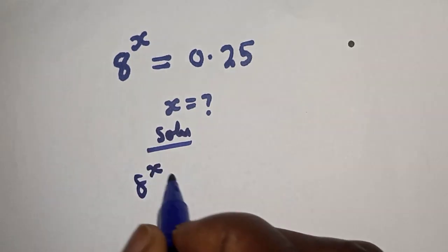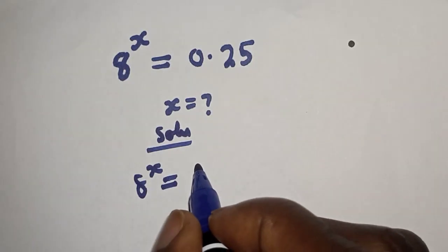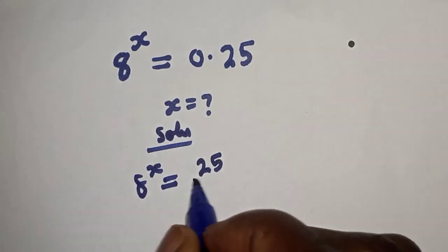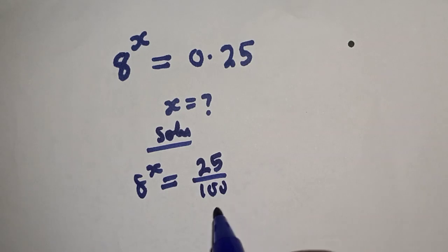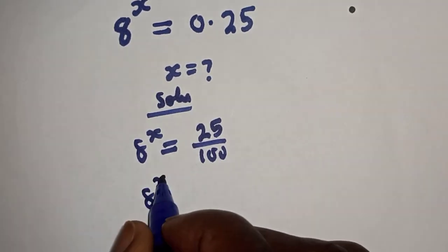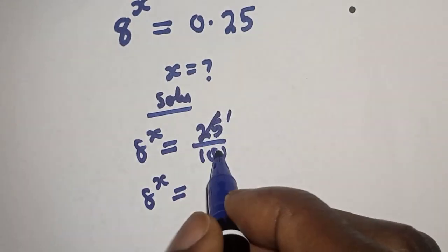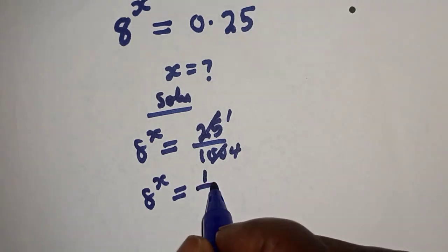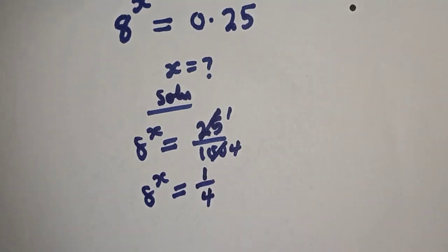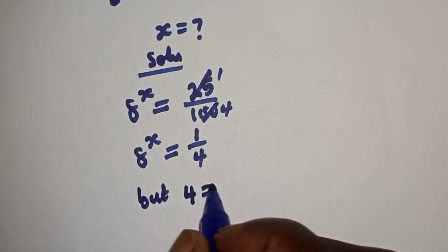8 raised to power x is equal to 0.25, which can be written as 25 over 100. 8 raised to power x is equal to 25 here, 125 here, 4, 1 over 4. But 4 is equal to 2 squared.